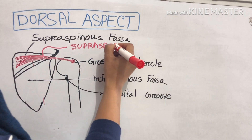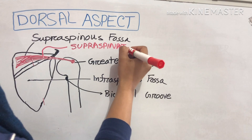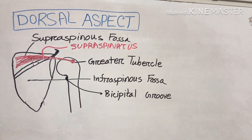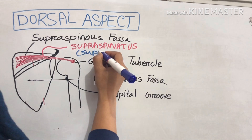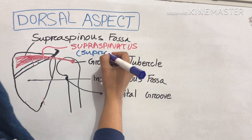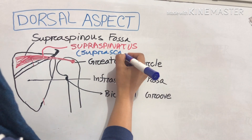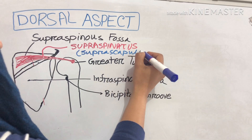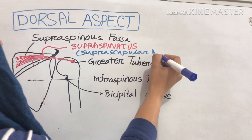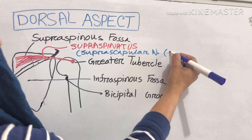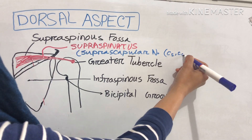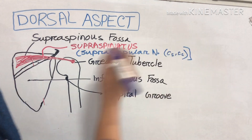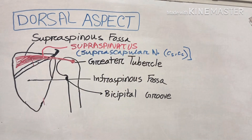The supraspinatus muscle is supplied by the suprascapular nerve from C5, C6.